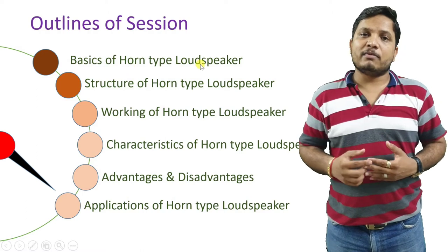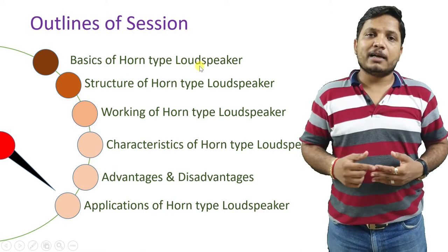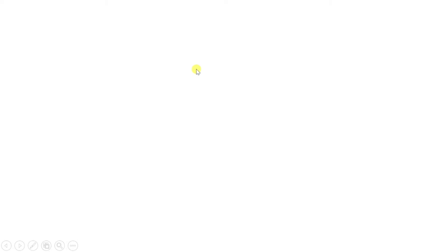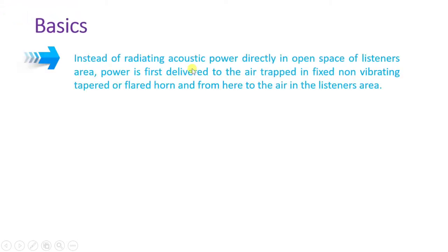Let us begin with the first agenda — basics of horn type loudspeaker. Instead of radiating acoustic power directly in open space to the listener, power is first delivered to the air in a trap fixed vibrating tapered flare horn, and then it goes to the air.